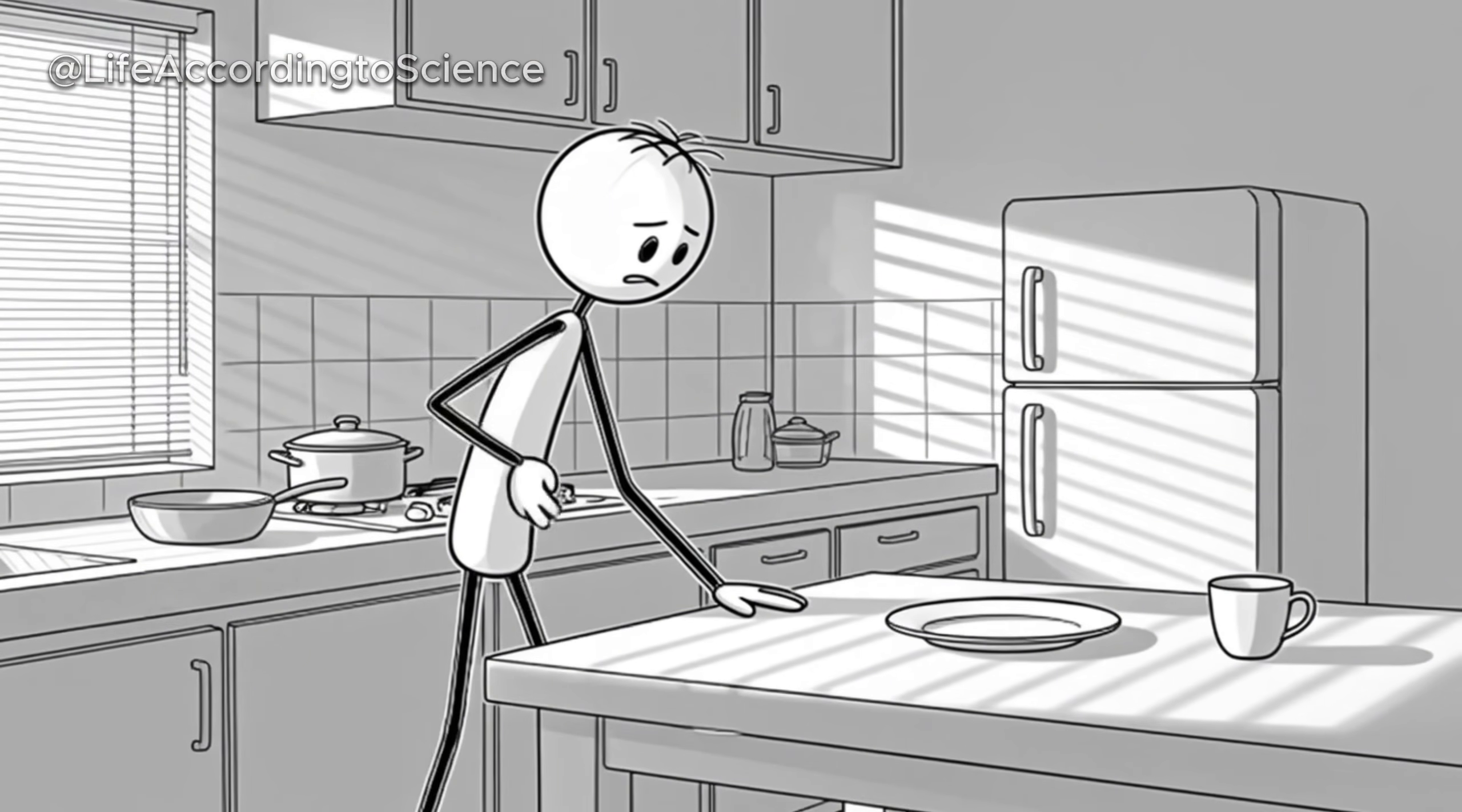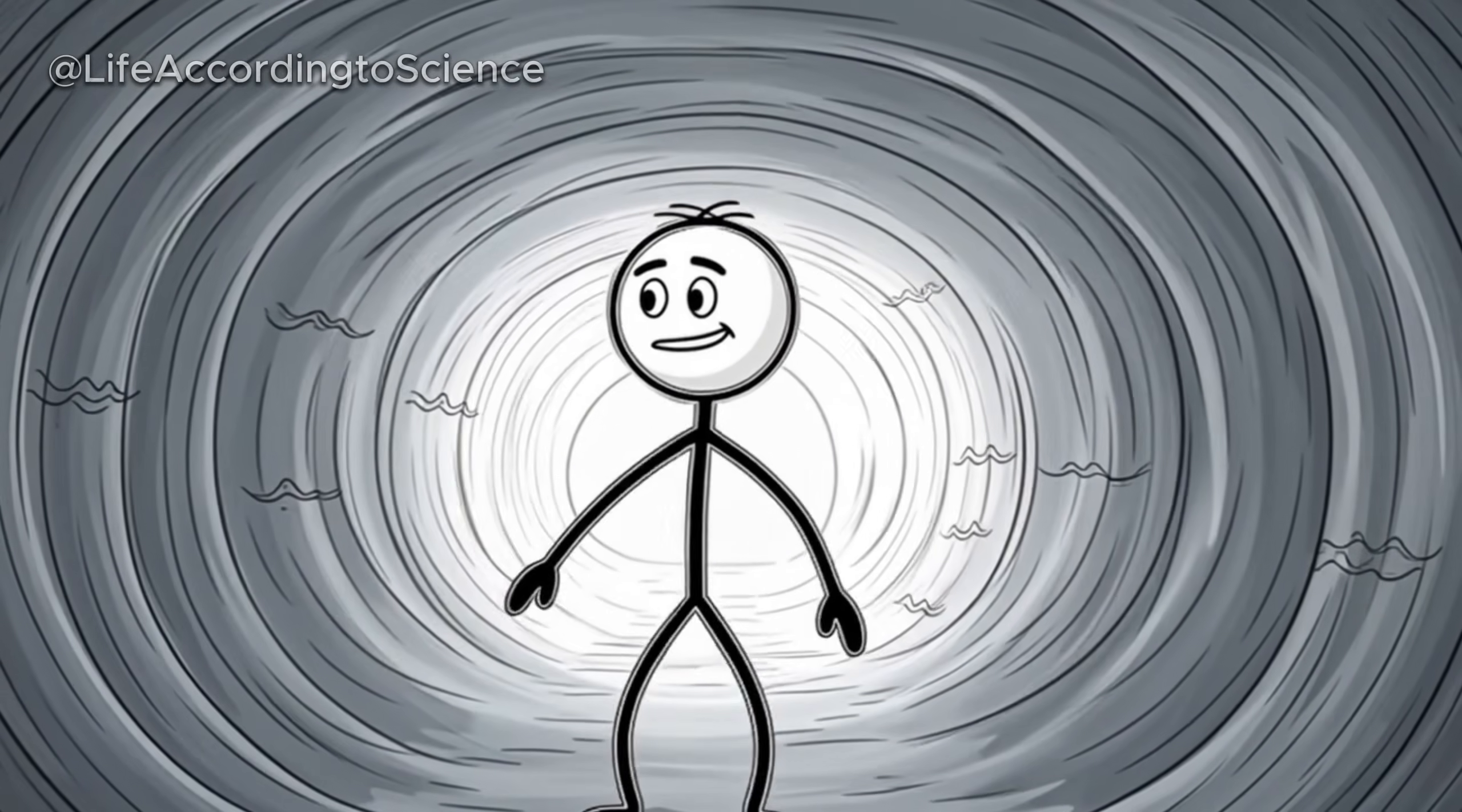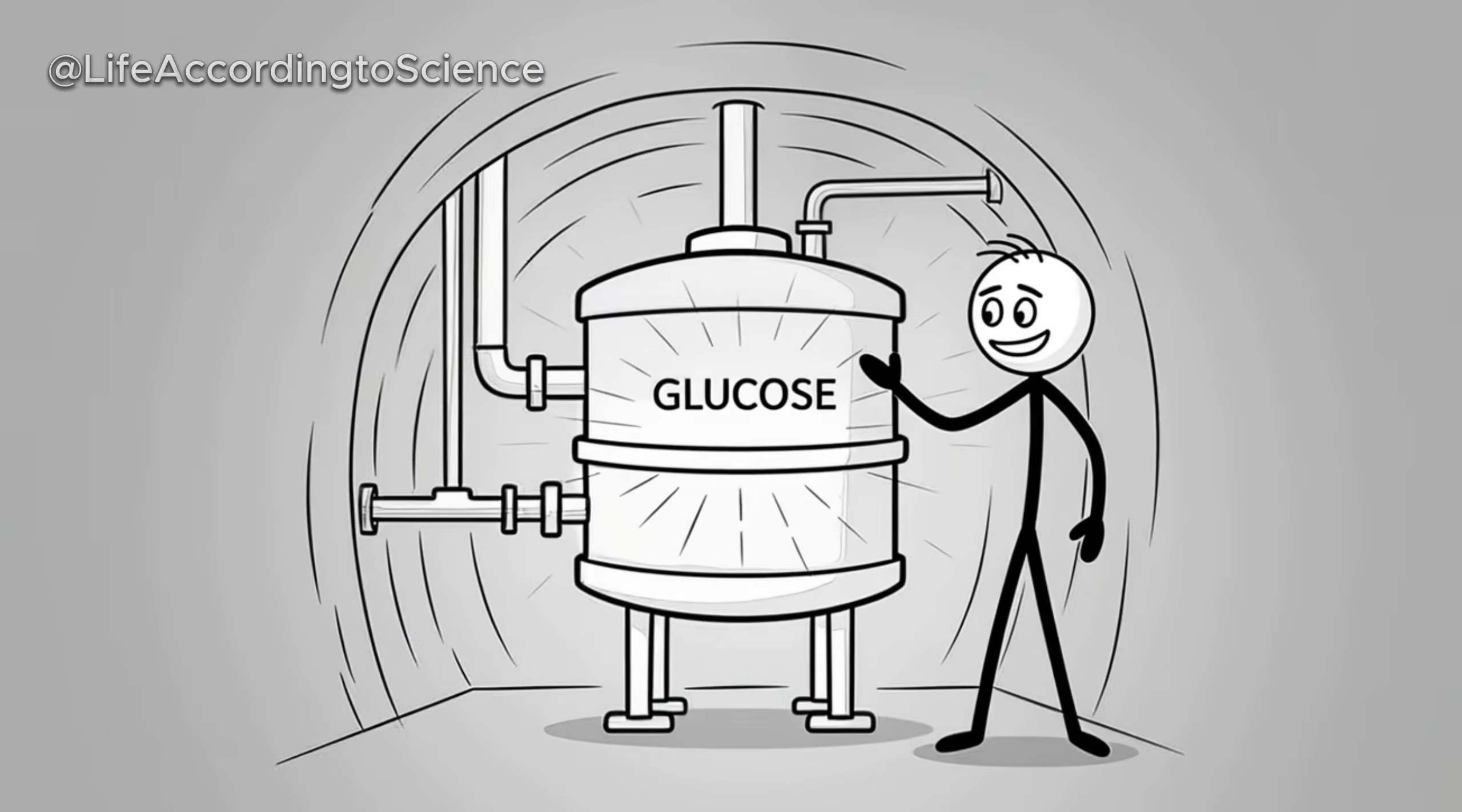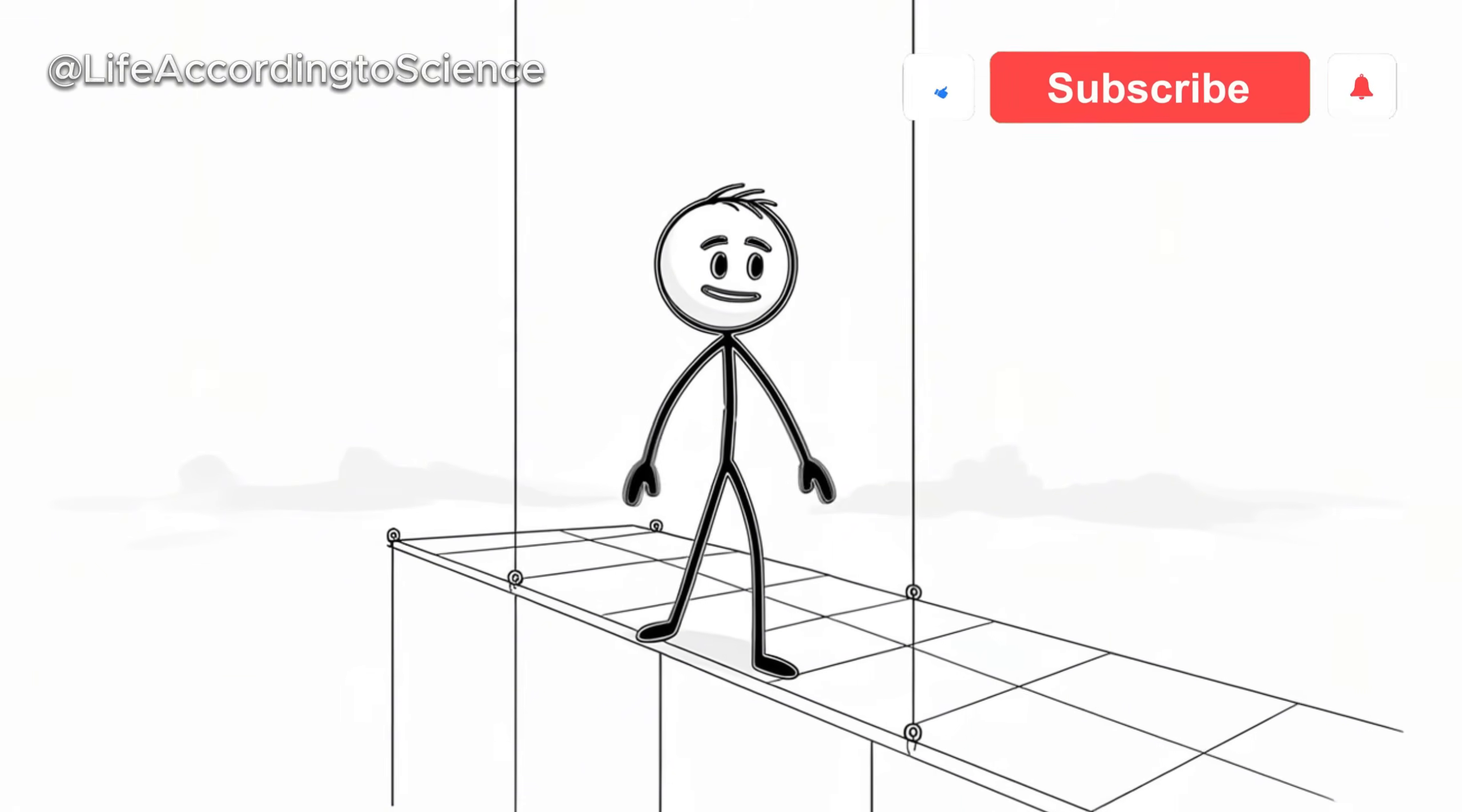The first few hours without food are when your body notices something's off. Your blood sugar begins to drop slightly, and your brain, which runs almost entirely on glucose, starts sending signals that you're hungry. The familiar stomach growl? That's your digestive tract contracting as part of a reflex called migrating motor complex, trying to push out leftovers and prepare for the next meal that never comes. At this stage, you're still burning the energy from your last meal.